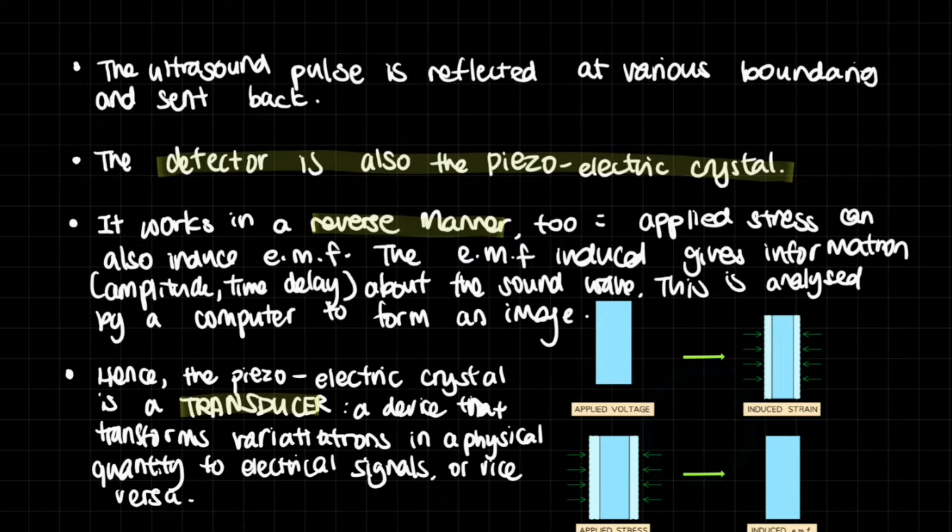If there is an induced EMF on the crystal, it's going to change shape. But if the crystal is meant to change shape because of different pressures, the crystal is also going to induce its own EMF. The EMF induced gives information about the sound waves - amplitude, intensity, and time delay. This is analyzed by a computer to form an image. The piezoelectric crystal is a transducer, a device that transforms variations in a physical quantity to electrical signals or vice versa.